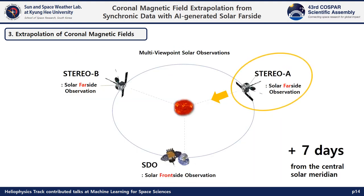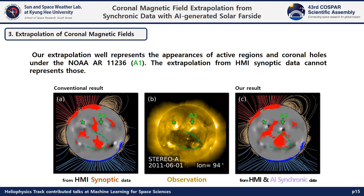We show the results of extrapolations and compare them with multi-viewpoint UV observations. When the heliographic longitude of STEREO-A was near the west limb of the solar front side, there were appearances of two active regions near the center of the solar disk. The conventional results computed from HMI synchronic data cannot represent those active regions. On the other hand, our results represent the active regions and show similar coronal hole distributions to the EUV observations.